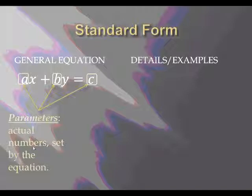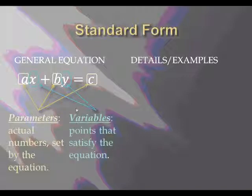It's established by the equation. So these are not variables. It will be an actual number when you're given the equation. Variables, or x and y, are points that make this equation true. We've been working with these variables from the beginning.